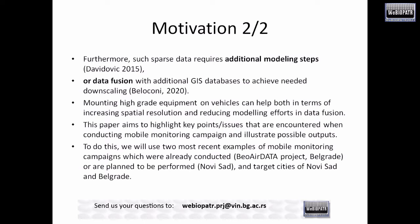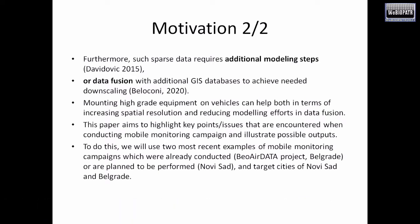One additional downside of sparse data is that you have to add additional modeling steps or fuse it with other data — the less data you have, the more modeling you have to do to extrapolate from it. One possible way to tackle this is to mount high-grade equipment on vehicles. That way, when you conduct an additional measuring campaign, you can increase spatial resolution and, when you collect large amounts of data, you can reduce modeling efforts.